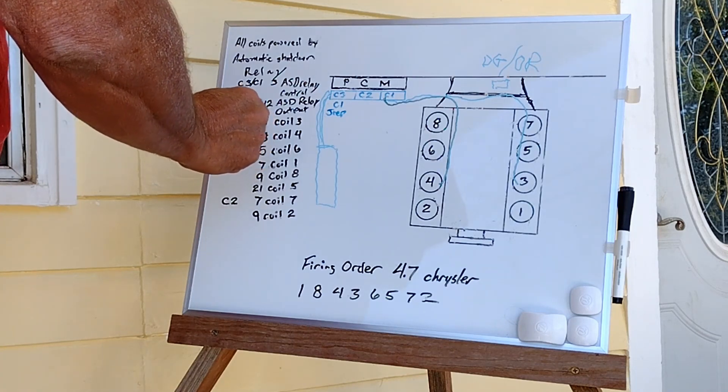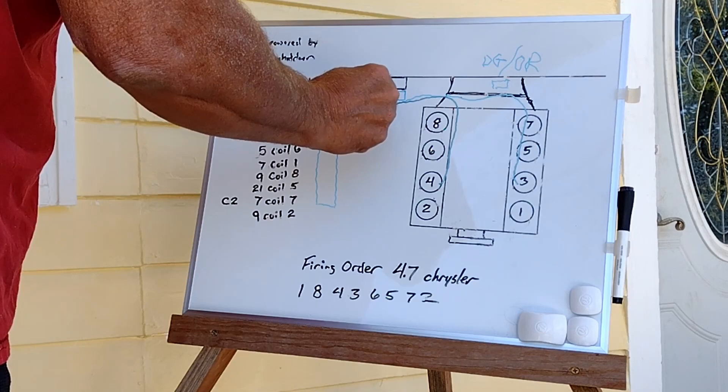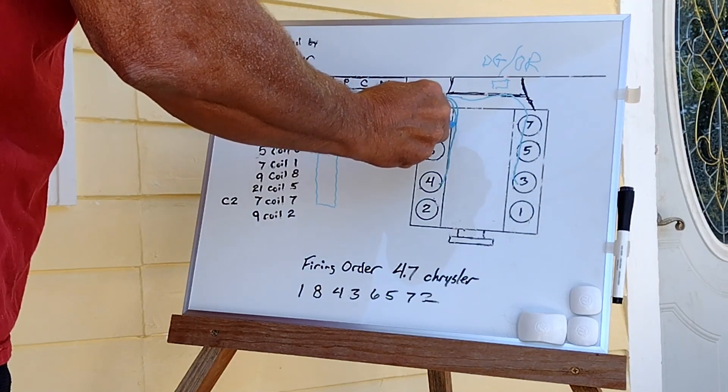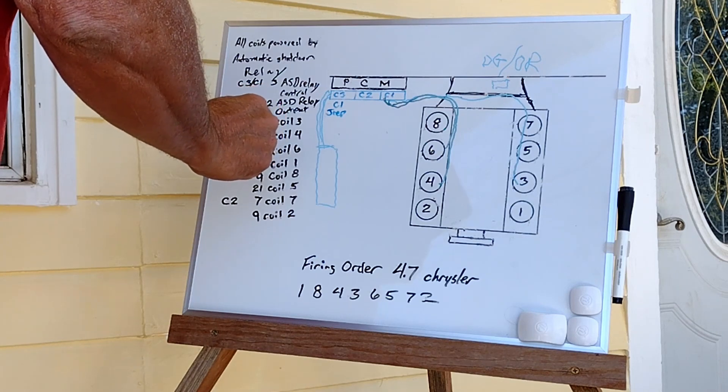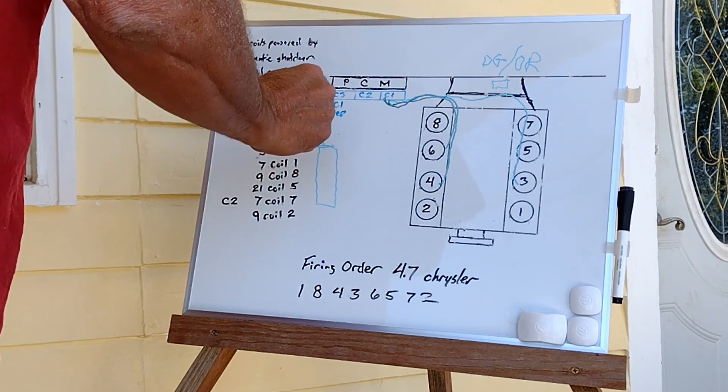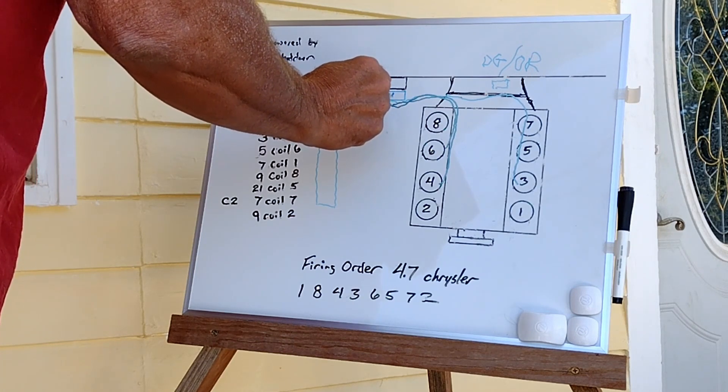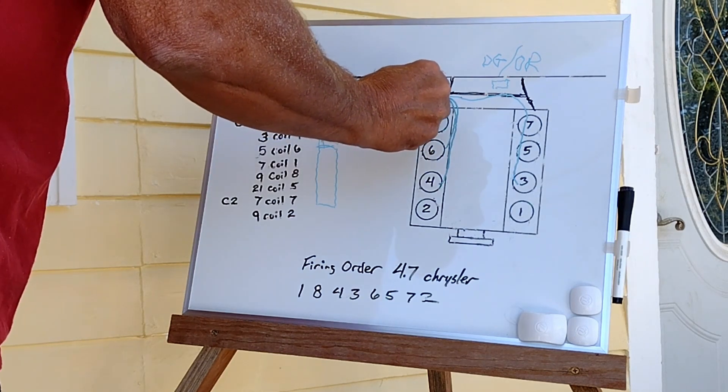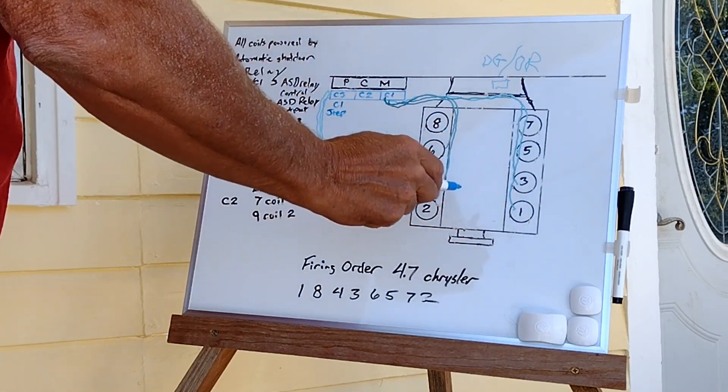You're going to take number five from the C1 to coil number six. You're going to take pin number seven to the number one coil. It's going to come all the way across and down to the number one coil.